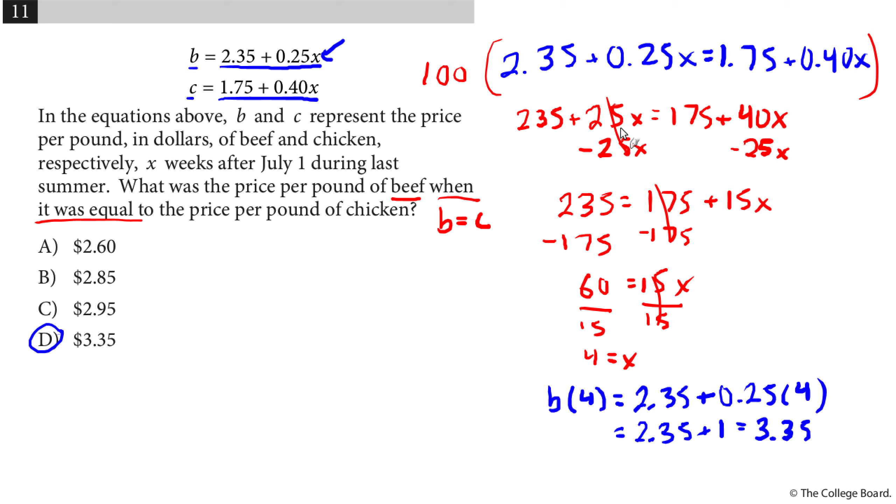Now that's one possibility. Another possibility is this. I could have done week, beef, chicken. And just if I understood that I was trying to figure out what the price was when beef costs as much as chicken, I just make a table. Week 0, week 1, week 2, week 3, week 4. I already know week 4 is the answer. But I could just go through and say at week 0, I would put 0 in for X and beef would just cost 2.35. And at week 1, I put 1 in for X, so that'd be 2.35 plus 0.25, which would give me 2.60. And I could go through again, adding 0.25, adding a quarter each time.